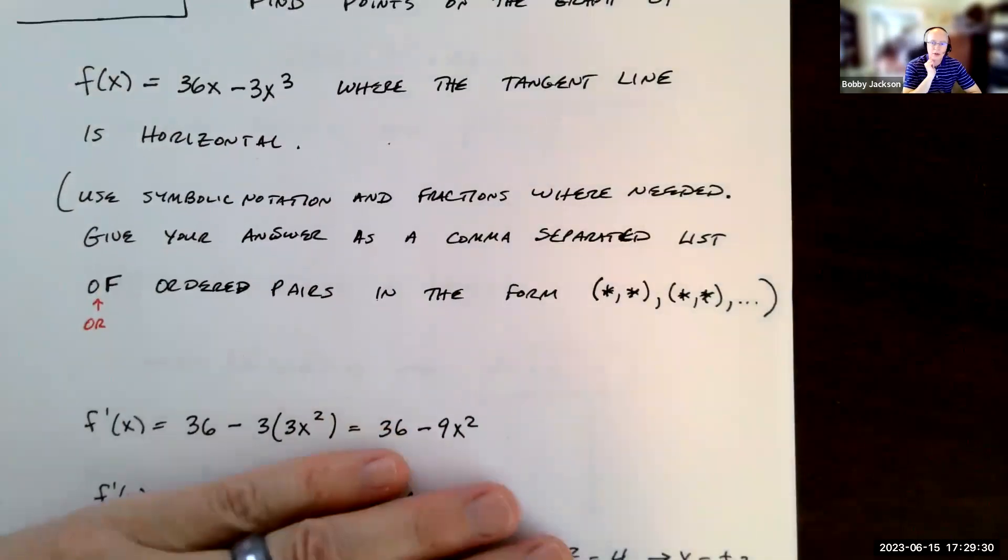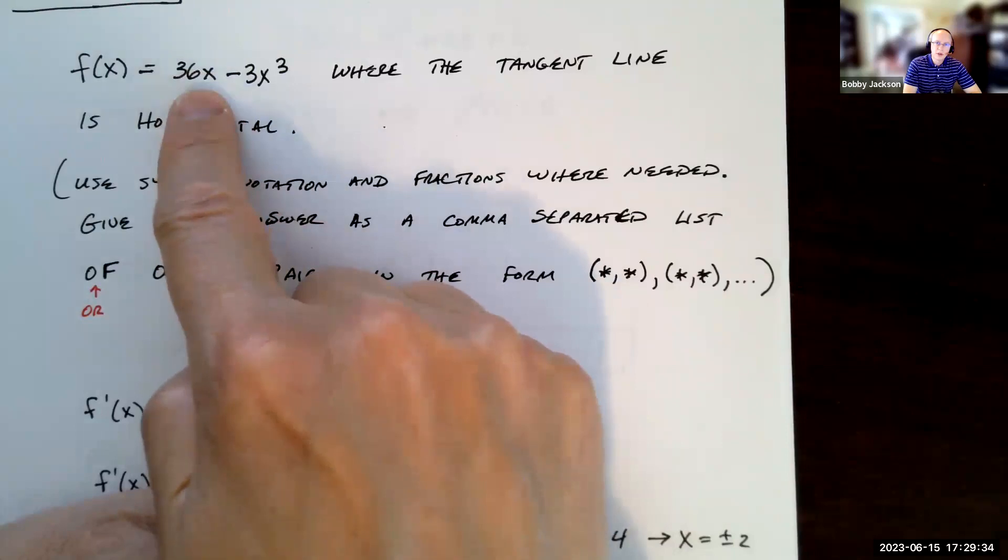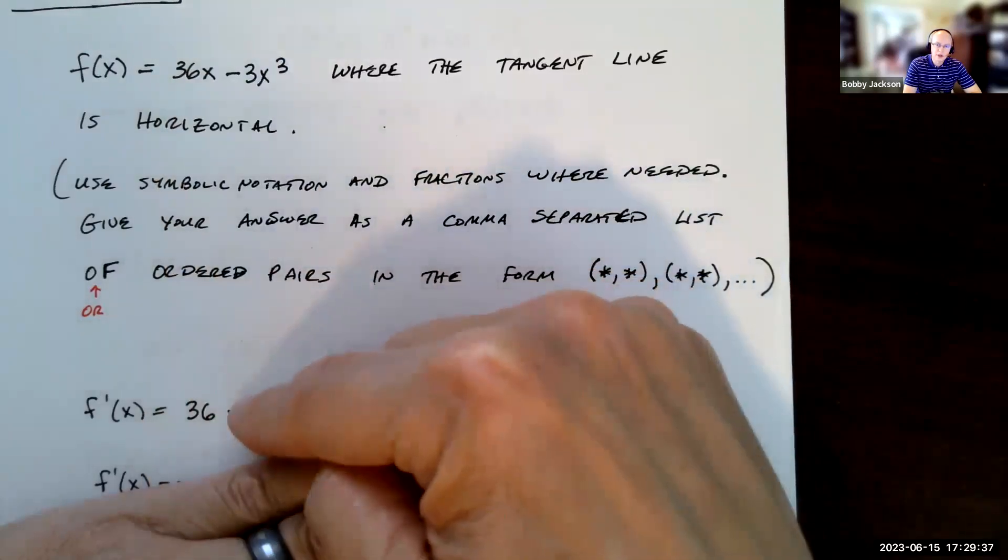So I'm going to use, of course, shortcut formulas. We're not told to use the limit definition to find the derivative. What's the derivative of 36 times x? That's easy. It's just 36.